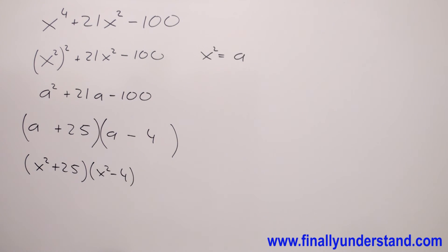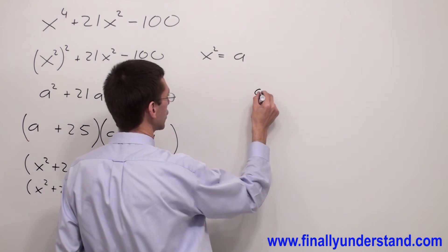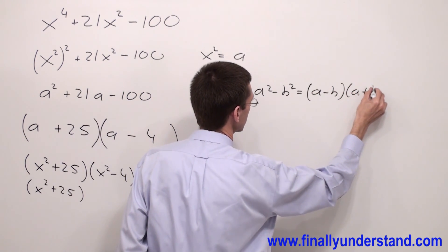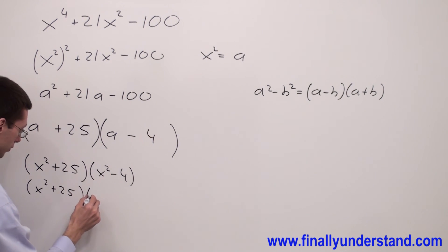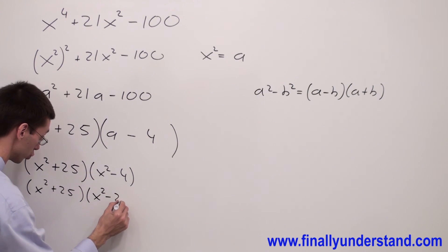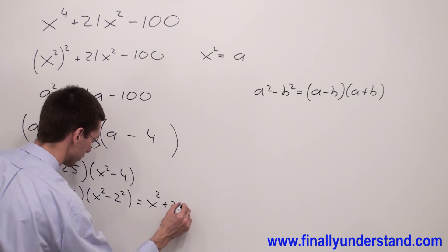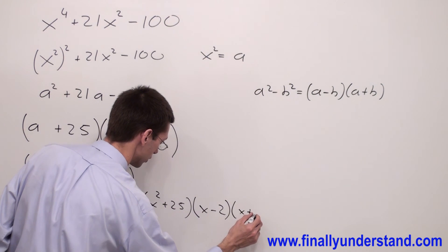But this is not the final solution yet — we can factorize this expression further, because I have x squared minus 4. I'm supposed to use the rule called the difference of two squares: a squared minus b squared equals (a minus b)(a plus b). To factorize completely, I can rewrite x squared minus 4 as x squared minus 2 squared, which equals (x minus 2)(x plus 2). So the final answer is (x squared plus 25)(x minus 2)(x plus 2).